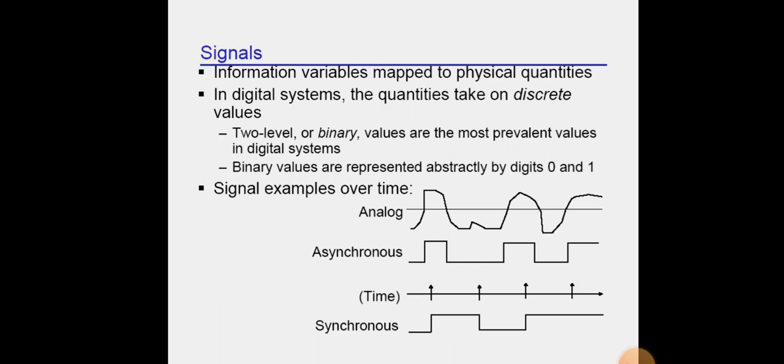Signals: information variables mapped to physical quantities. In digital systems, quantities take on discrete values. Two-level or binary values are the most prevalent values in digital systems. Binary values are represented abstractly by digits zeros and ones. Signal examples over time: analog, asynchronous, synchronous.